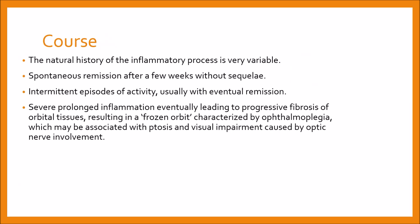The natural history of the inflammatory process is very variable. Spontaneous remission after a few weeks without sequelae can happen. There are intermittent episodes of activity usually with eventual remission. Severe prolonged inflammation can eventually lead to progressive fibrosis of orbital tissue, resulting in a frozen orbit characterized by ophthalmoplegia, which may be associated with ptosis and visual impairment caused by optic nerve involvement.